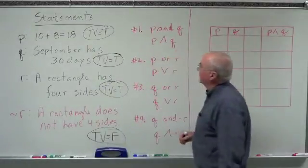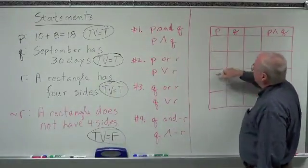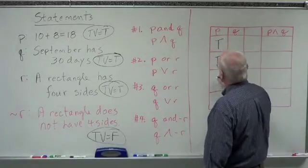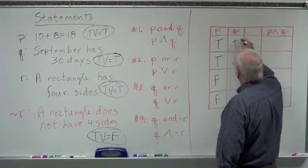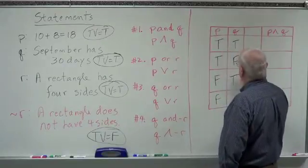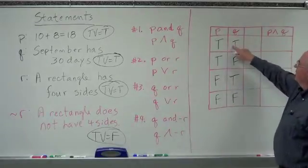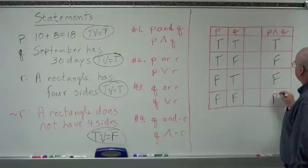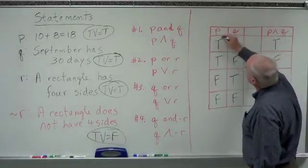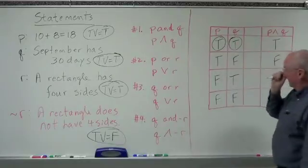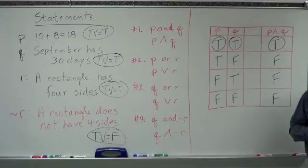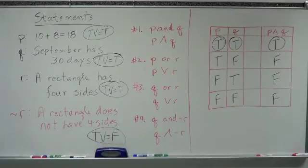So we've got our truth values laid out. For the P and Q truth table, we fill in T, T, F, F for P and T, F, T, F for Q. For P and Q, both have to be true, so: true, false, false, false. Circling the truth values: P is true and Q is true, so statement number one — P and Q — is going to be true.